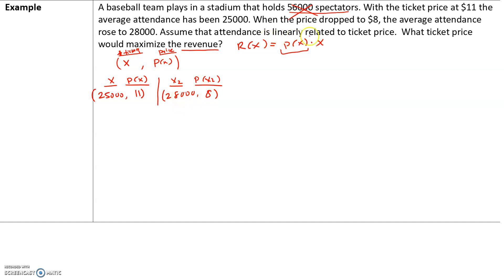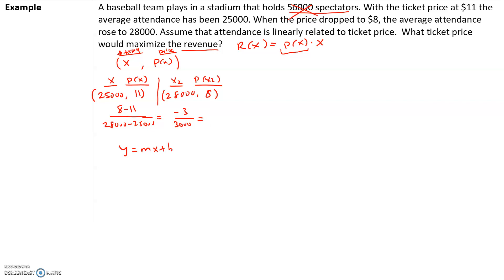Attendance is linearly related to price, so we can write this in the form y = mx + b. To find the slope: m = (y₂ − y₁)/(x₂ − x₁) = (8 − 11)/(28,000 − 25,000) = −3/3,000. Be very careful converting to a decimal — keep as many decimal places as possible. I'll leave it as a fraction: −1/1,000.